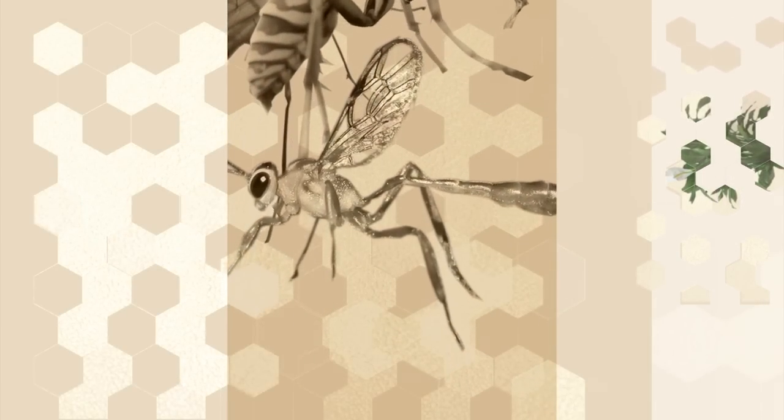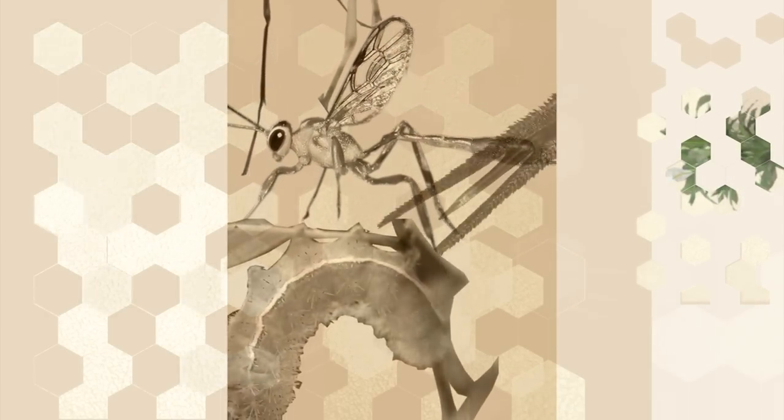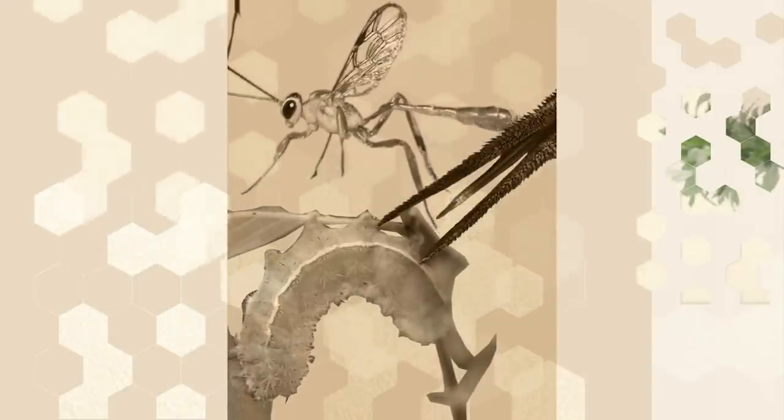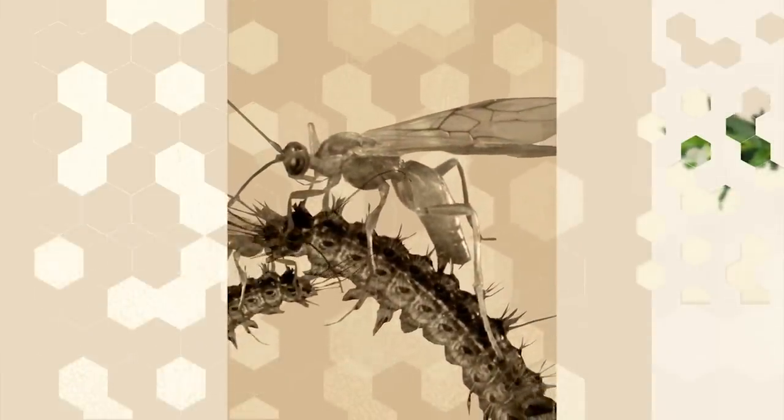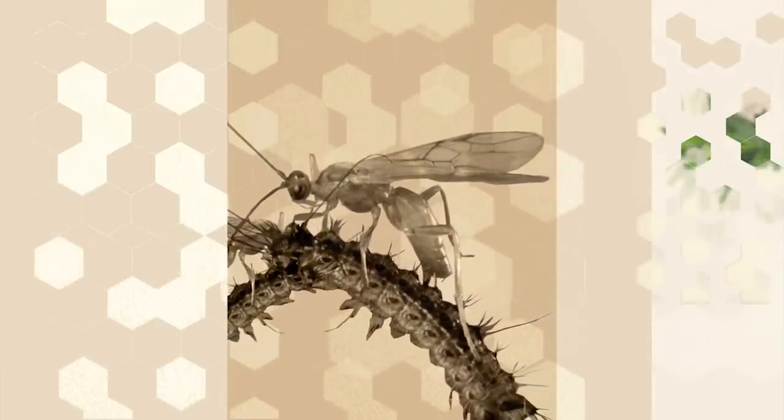What they do is, once they come in, they inject the eggs inside. They put the ovipositor inside the caterpillar, lay the eggs inside. That egg will emerge inside the caterpillar, eat the caterpillar from the inside out,